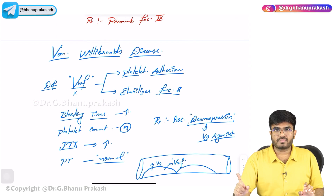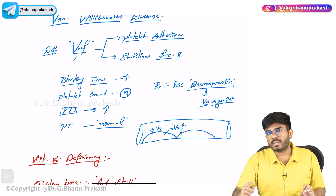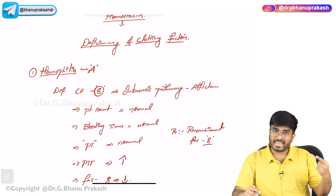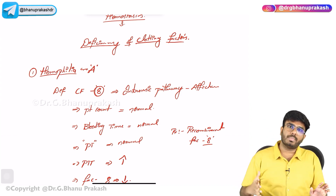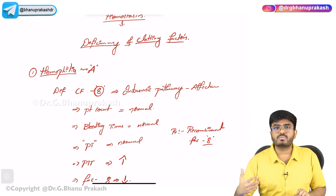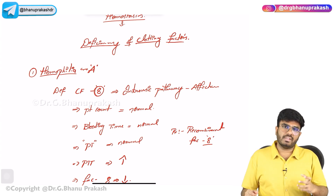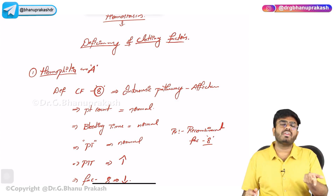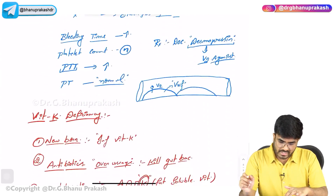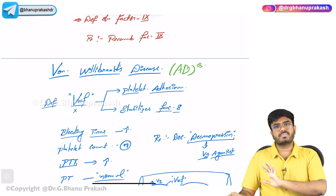To recap: von Willebrand's disease — desmopressin is the drug of choice via V2 receptor stimulation. In von Willebrand's disease, PTT is elevated because factor 8 is not getting properly stabilized. Hemophilia A is factor 8 deficiency and Hemophilia B is factor 9 deficiency — both cause deep internal bleedings, hemarthrosis, bleeding from IV sites and operative sites. Treatment is simply replacing the deficient factor. One important point: von Willebrand's disease follows an autosomal dominant inheritance pattern.